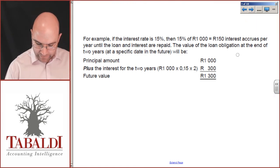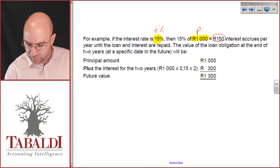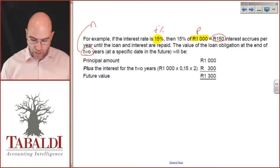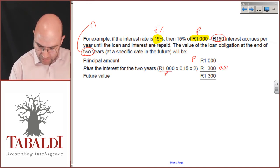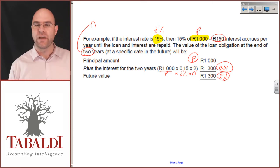In this example, we have got interest of 15%, a thousand rand. So, this is the interest percentage. We've got principal of a thousand, and therefore, 150 rand will accrue per year until the loan and the interest are repaid. The value at the end of two years, that is, the n. I've got principal amount is a thousand. I need to add the full interest amount, which is a thousand, being the principal, times the interest rate percentage times the duration, two years.